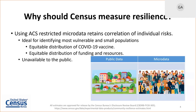With that microdata, you can retain a correlation of individual risk — something unavailable to anyone else using publicly available data. What does it mean to retain a correlation of individual risk? If you're looking at public data, you can find out perhaps the percentage of the population that is in poverty, the percentage that has a high school diploma, or the percentage over the age of 65. With restricted microdata, we can go down to the individual level and retain a correlation of individual risk.